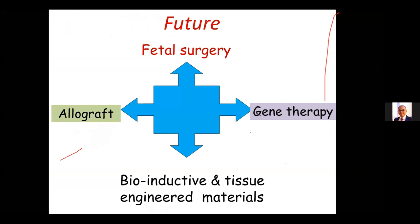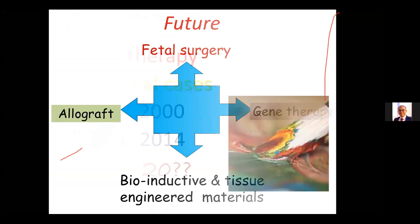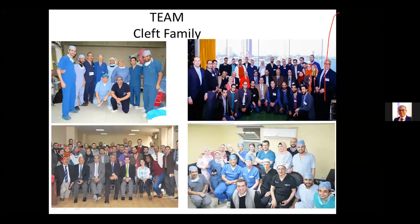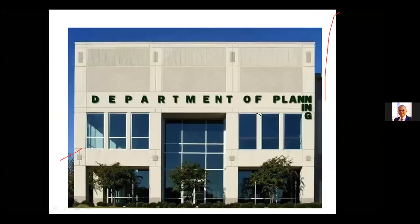How about the future? We are looking toward fetal surgery, allografts, bioinductive and tissue engineering materials. But what I think is very important is gene therapy for familial cases — it was science fiction in the 2000s, became a dream in 2014, and we're waiting for when it will become a cure. It's a teamwork, and our international cleft family has helped us a lot. You have to plan, because if you fail to plan, you are planning to fail.